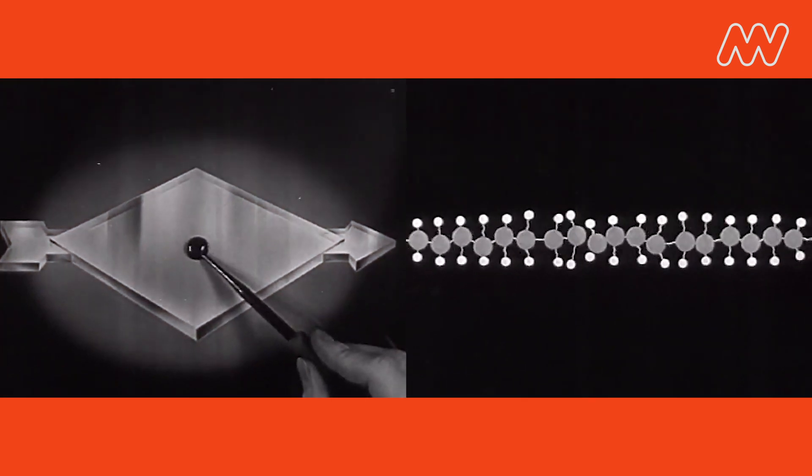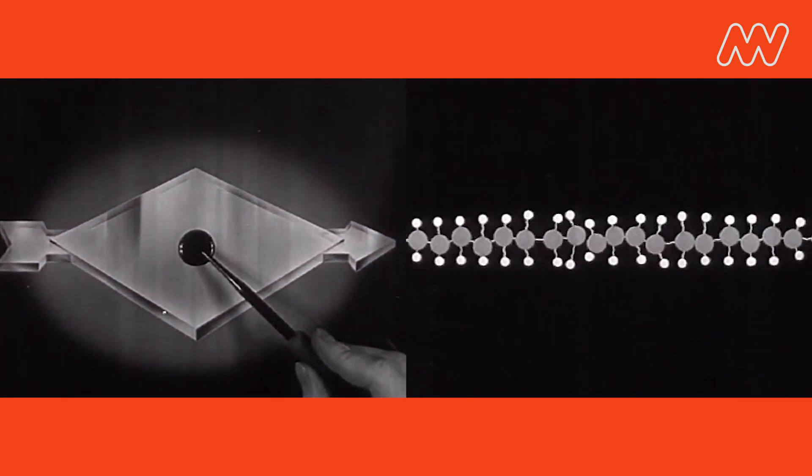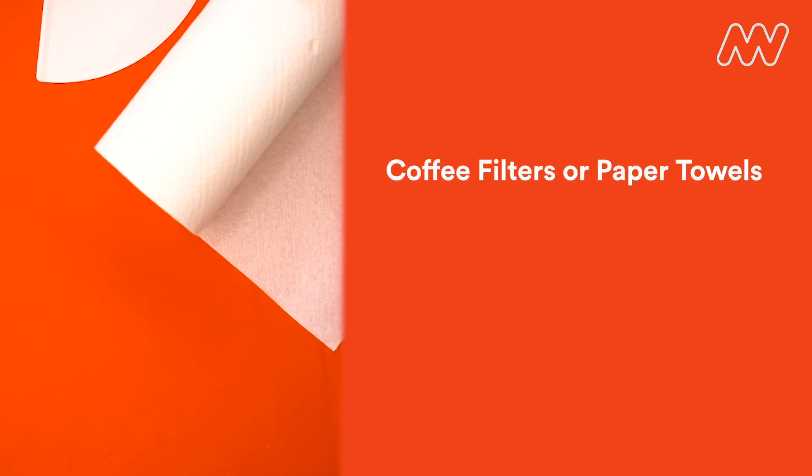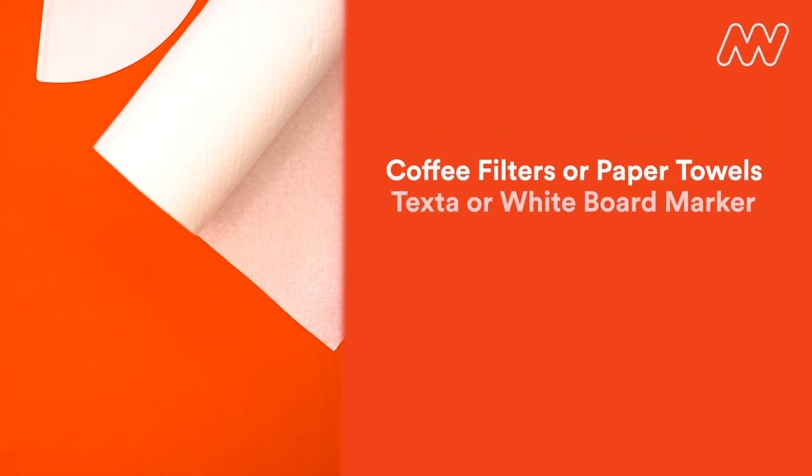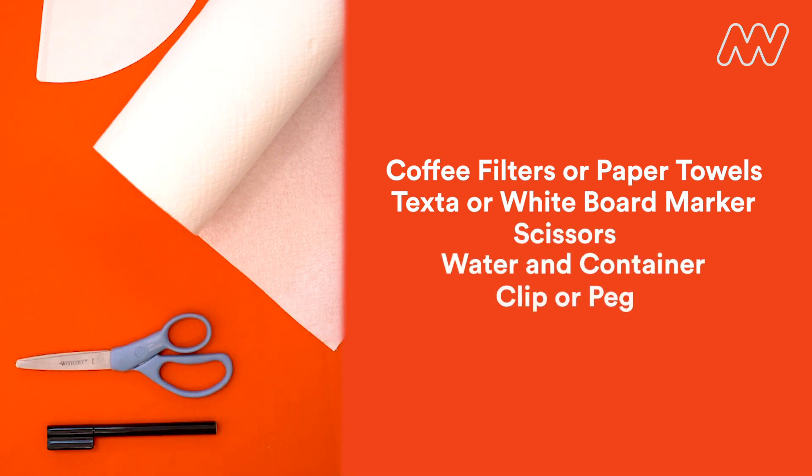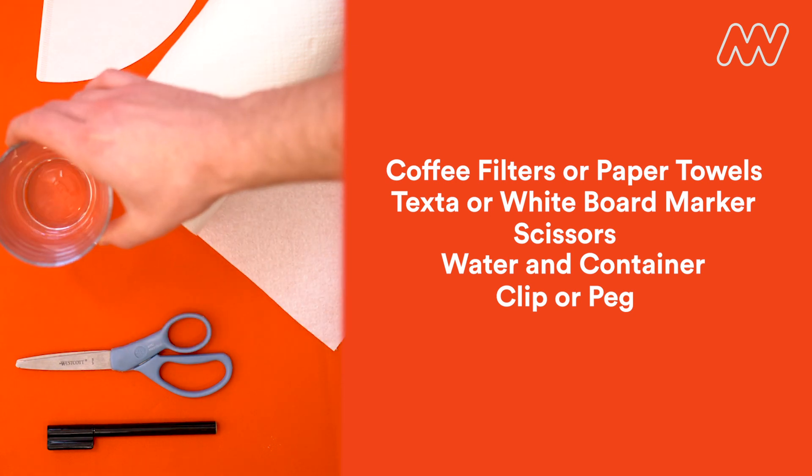First of all we're going to find out what the color black is really made of. You'll need some absorbent paper, such as a coffee filter or piece of paper towel, a black marker or whiteboard marker but not a permanent marker, scissors, water, a tall glass or container and a clip or peg.